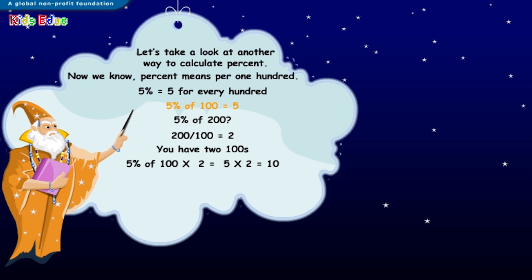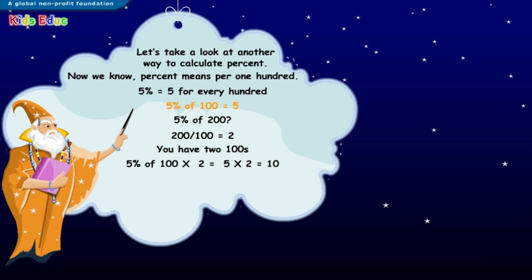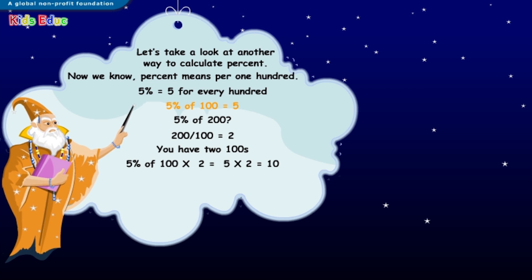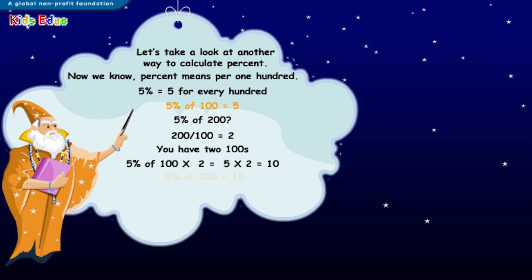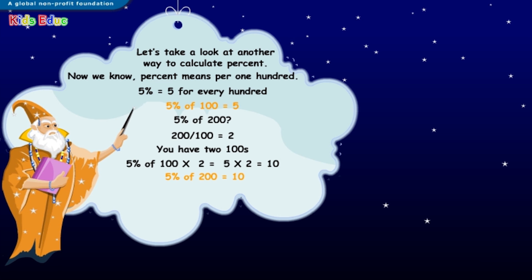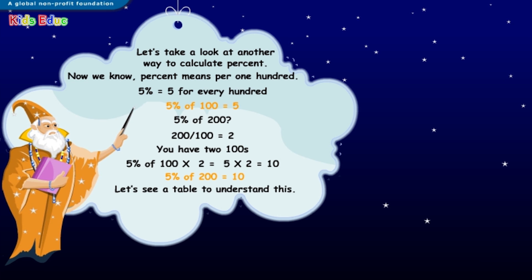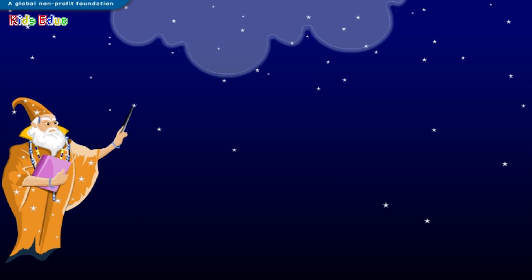Therefore, multiply five percent of one hundred by two, which is five times two, which equals ten. So, five percent of two hundred is ten. Let's see a table to understand this.